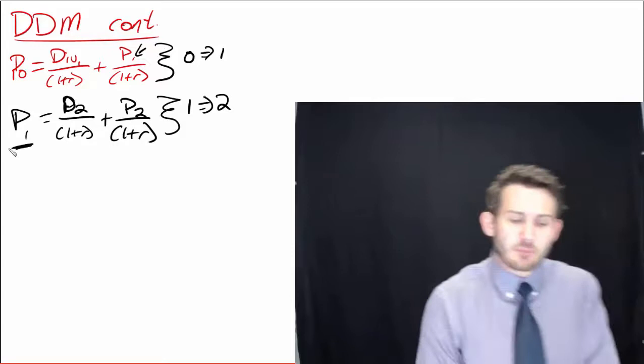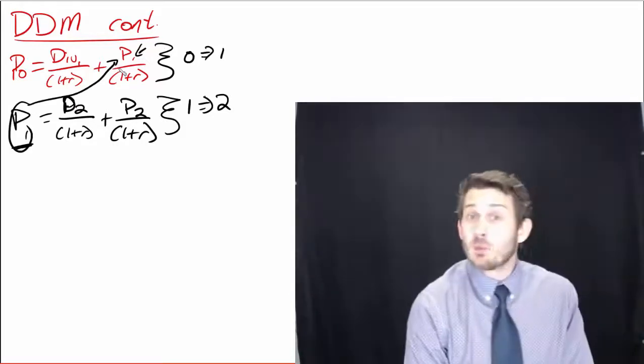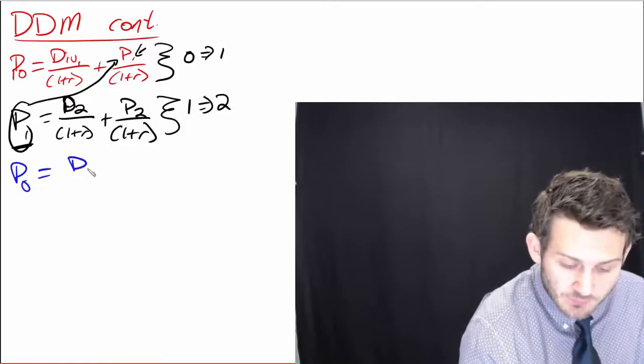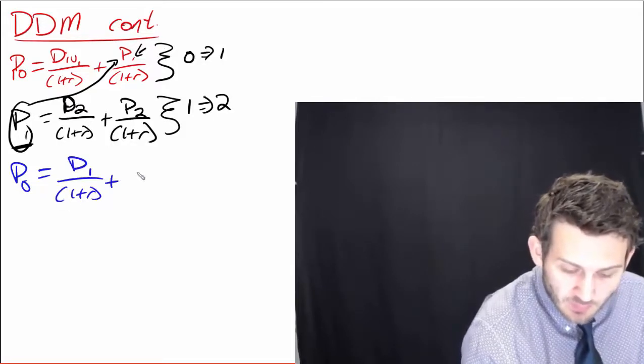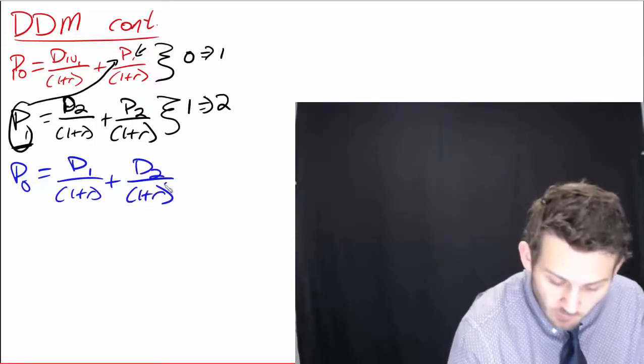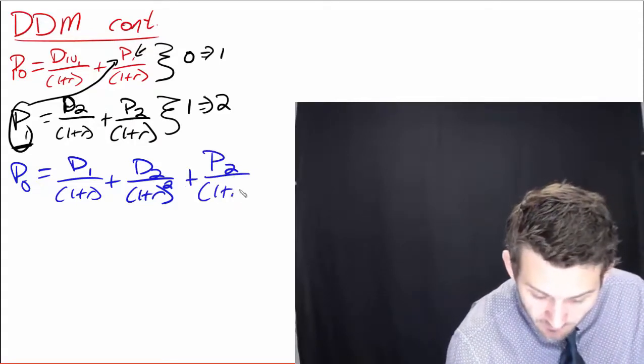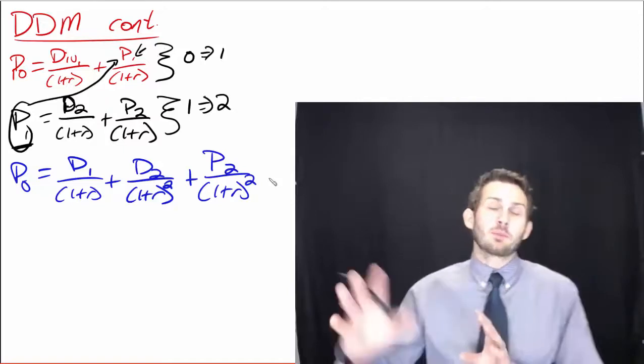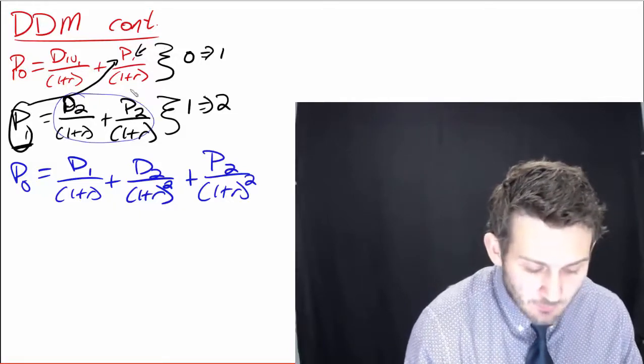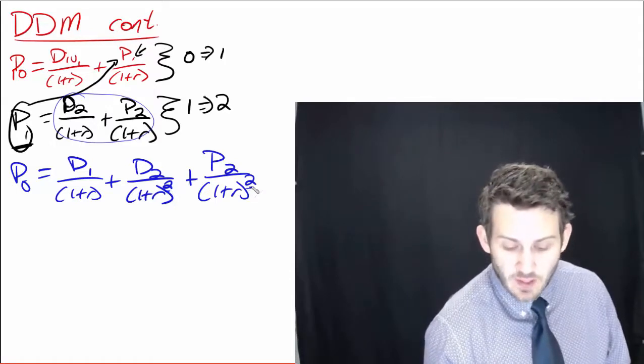But what we're able to do here is say, all right, we have P1, so we can plug this part right here into that part up there on P1. So that's showing us then that P0 is going to be equal to D1 divided by 1 plus R plus D2 divided by 1 plus R squared. And all that is is that we just plugged in the algebra there. We took this statement right here and plugged it in there and then divided the whole thing by 1 plus R, which is how we get to the squares down here.